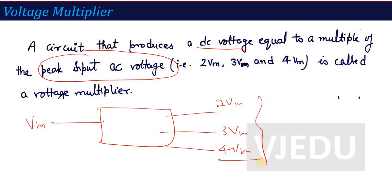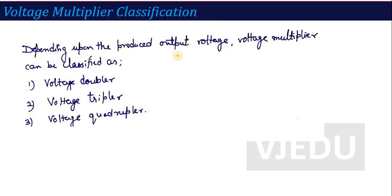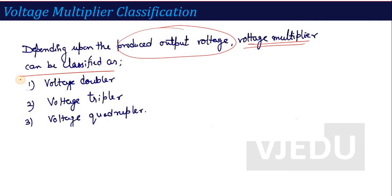If the output is double, we call it a doubler; triple — a tripler; four times the input voltage — a quadrupler. According to the output voltage produced, the Voltage Multiplier can be classified as Voltage Doubler, Tripler, and Quadrupler. This topic is very important; in past exam papers, questions like 'explain the working of Voltage Quadrupler' or 'explain the working of Voltage Doubler' have been asked.